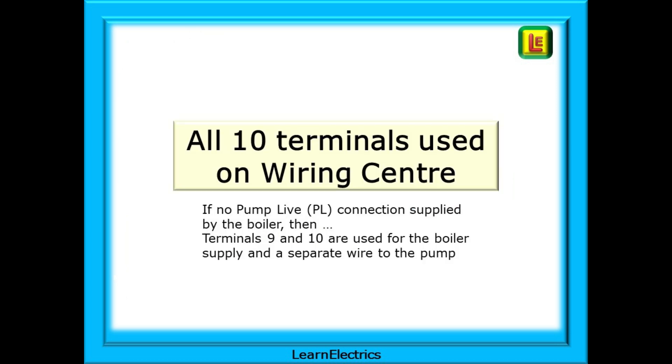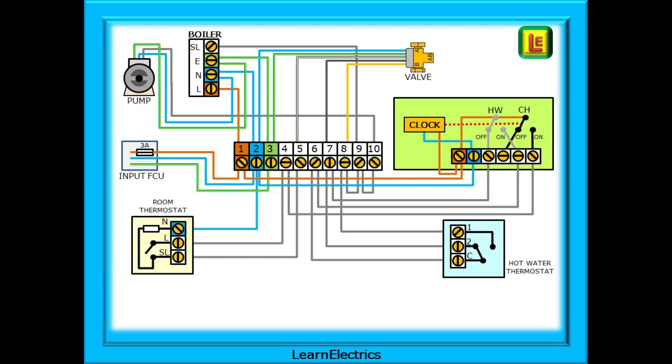Some wiring centers are supplied with and use all 10 terminals in the wiring center. If there is no pump live or PL connection on the boiler, then we may have to energize the pump from the wiring center. In this example we will link terminals 9 and 10 to terminal 8 and use these for the boiler and the pump separately. This is shown on this slide. The orange wire goes to terminal 8. This is linked to 9 and then to 10. 9 goes to the boiler and 10 goes to the pump. One disadvantage of this method is that there is no overrun for the pump.